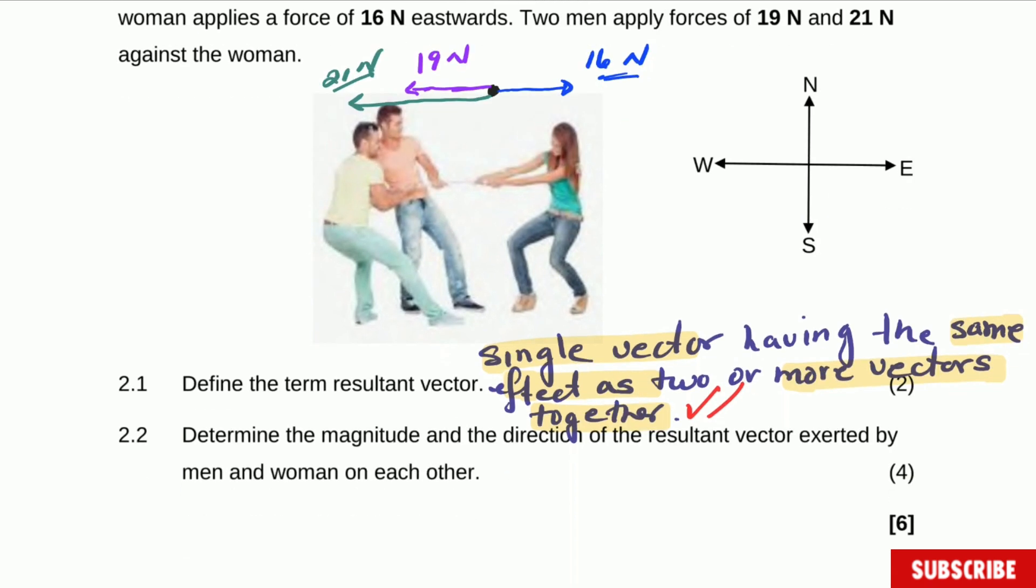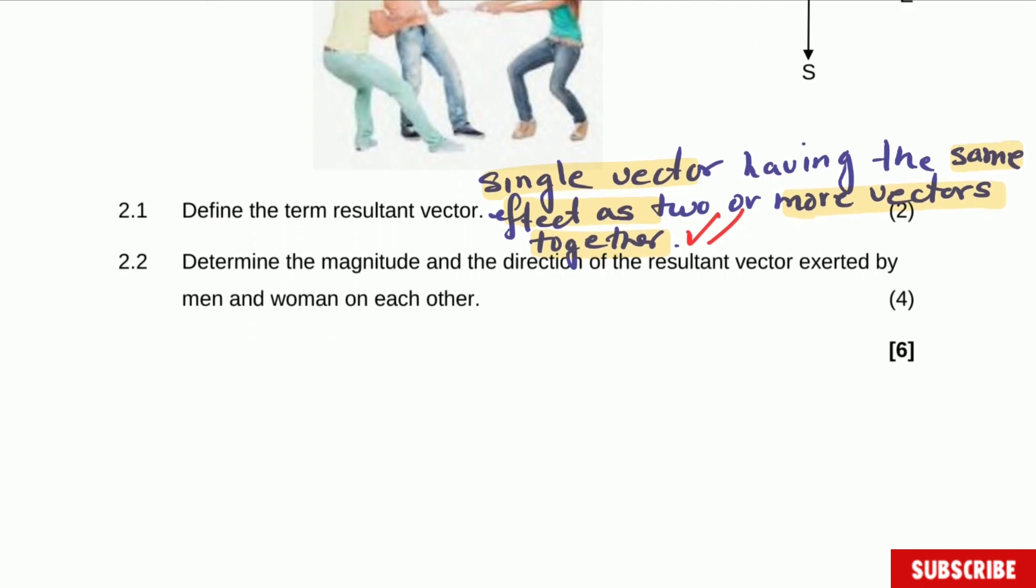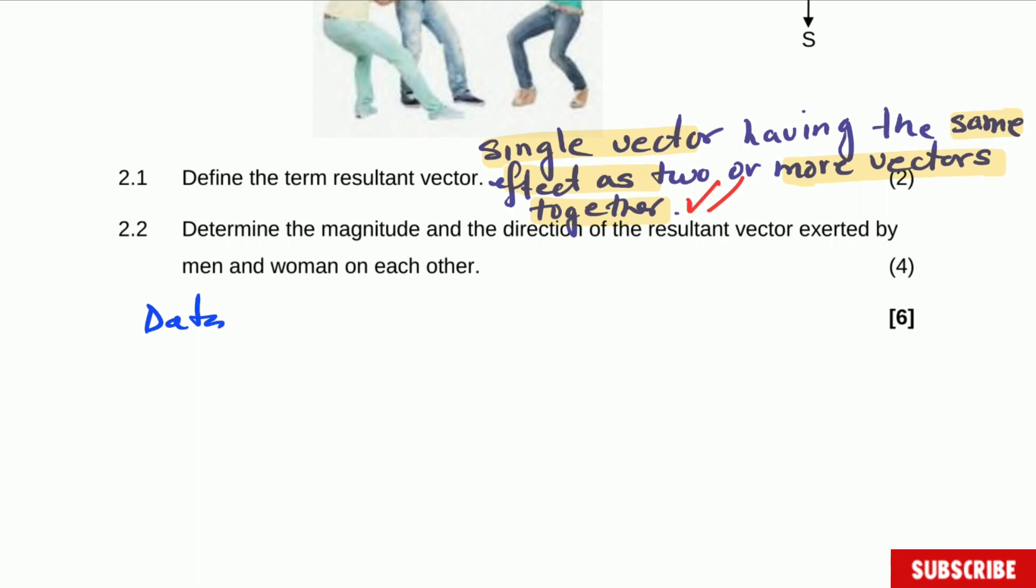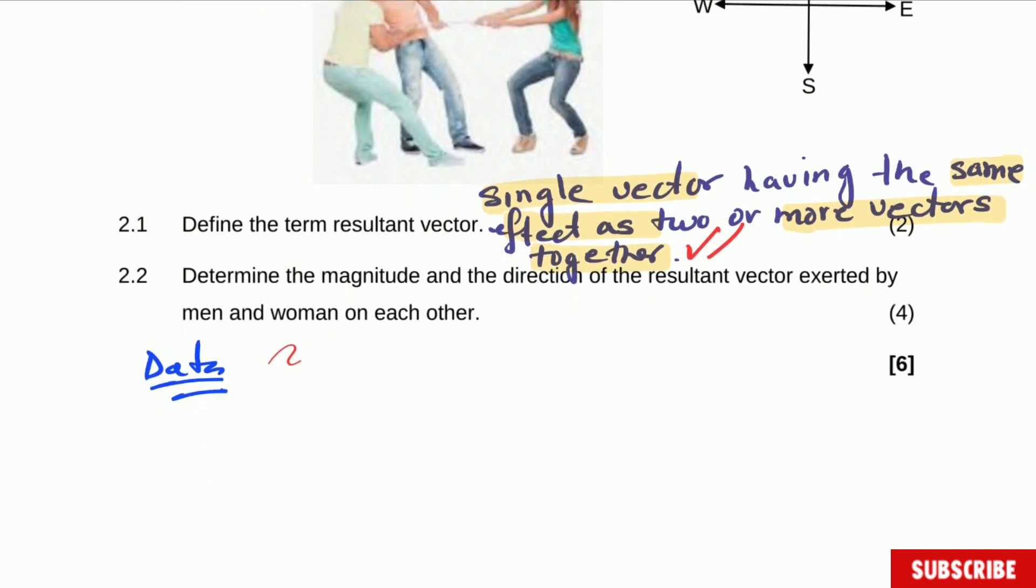That is the correct definition. Determine the magnitude and direction of the resultant vector exerted by men and women on each other. They don't say if it is graphically or algebraically but it doesn't really matter. We're going to do it algebraically because it's quite simple. So to answer this question the first thing we're going to do is to write the data and select a direction. So you can say either east is positive or west is positive and this one is entirely up to you. For example let's say east is positive. It means that everything that is pointing to the east is positive and anything that is pointing to the west is negative.